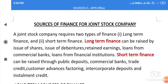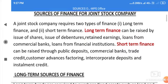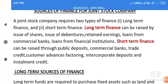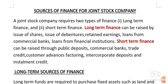A joint stock company requires two types of finance mainly — long-term finance and short-term finance. Long-term finance can be raised by issue of shares and issue of debentures.